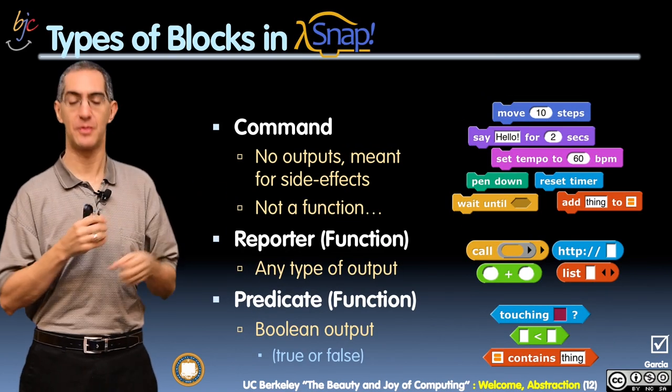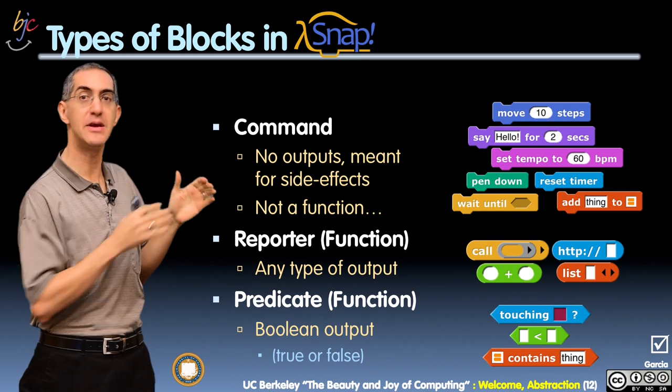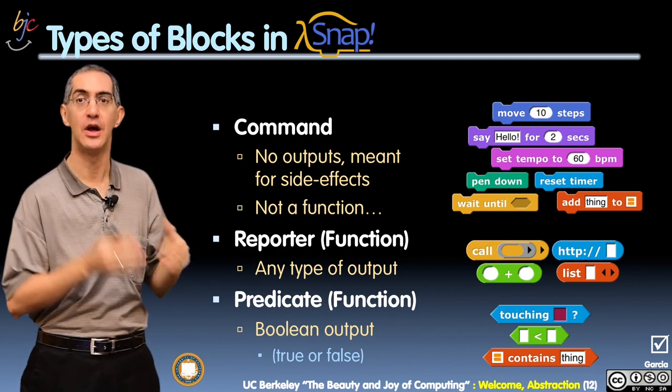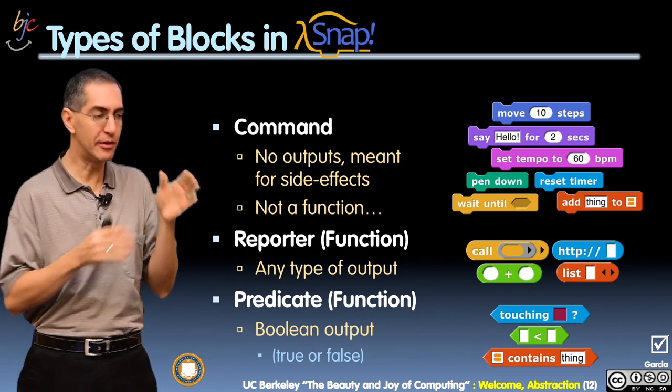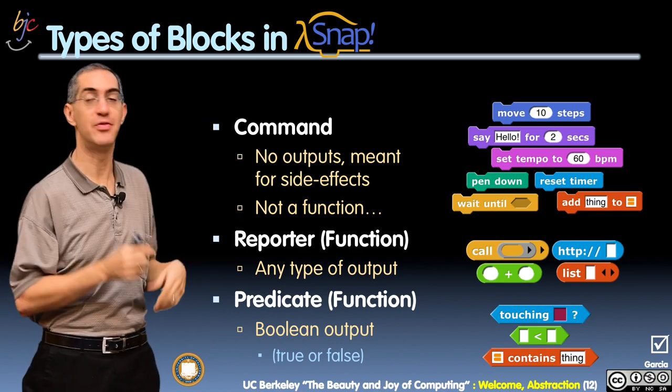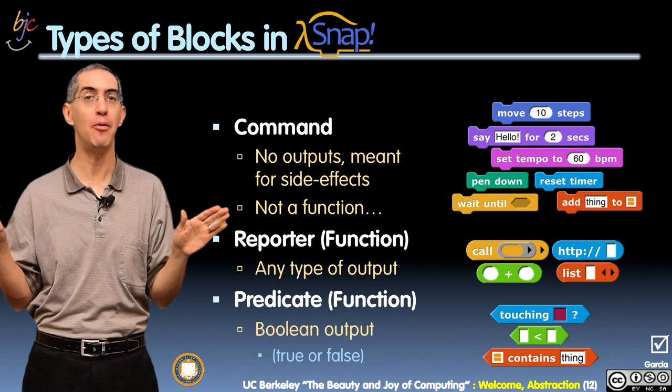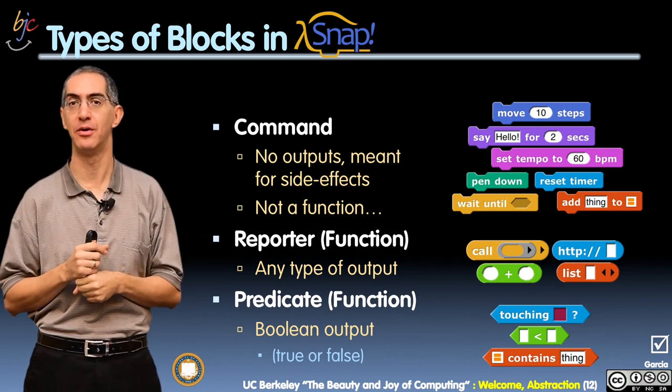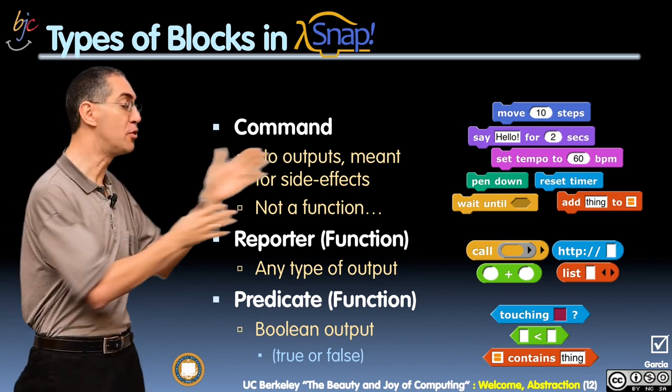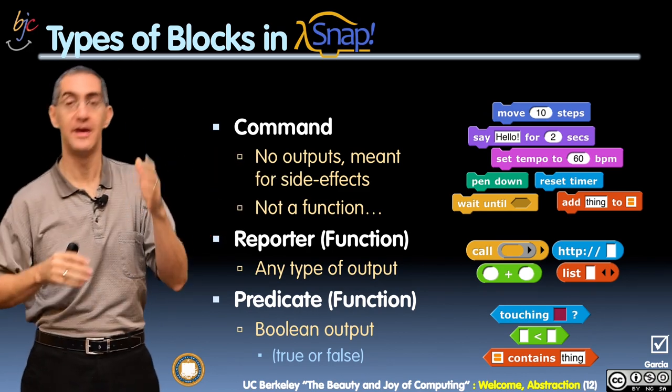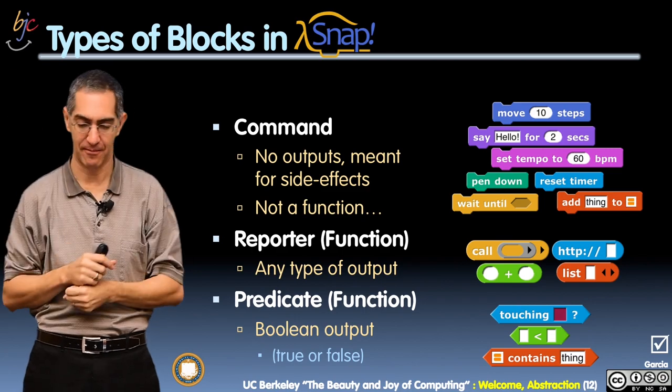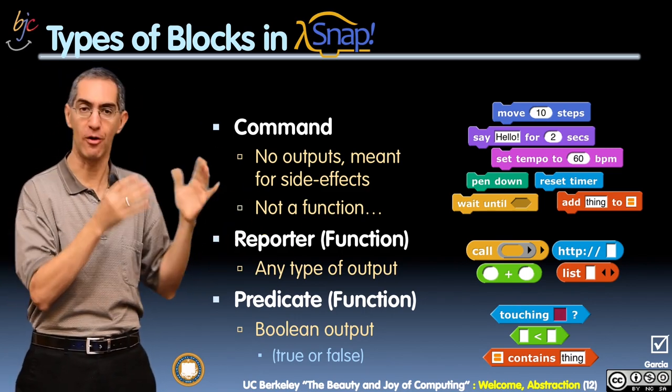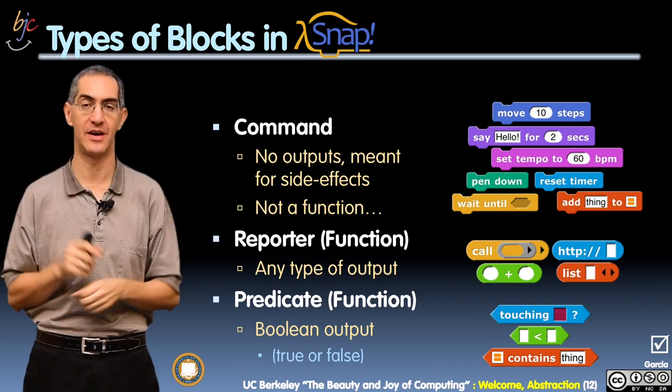The types of blocks we have in Snap: there are three overall types of blocks. One is called a command. Those look like cookie cutters, like puzzle pieces. Those don't have any output. The goal is for side effects. Each of the blocks I show you as an example have a side effect: move, which moves the sprite, or say something, which means your sprite says something, or put a pen down, or reset a timer, or add something to a list. All those things have a side effect and no return value.